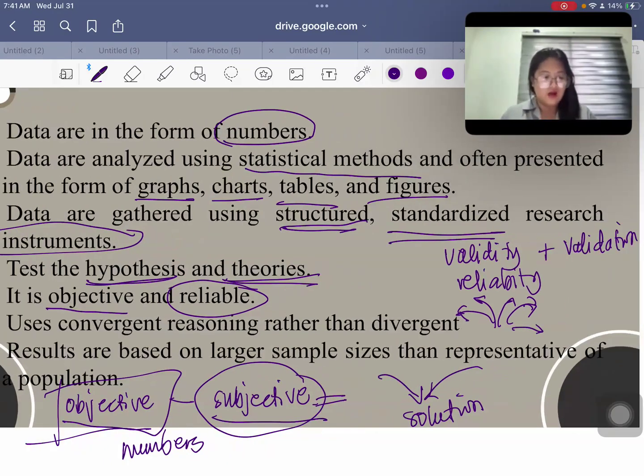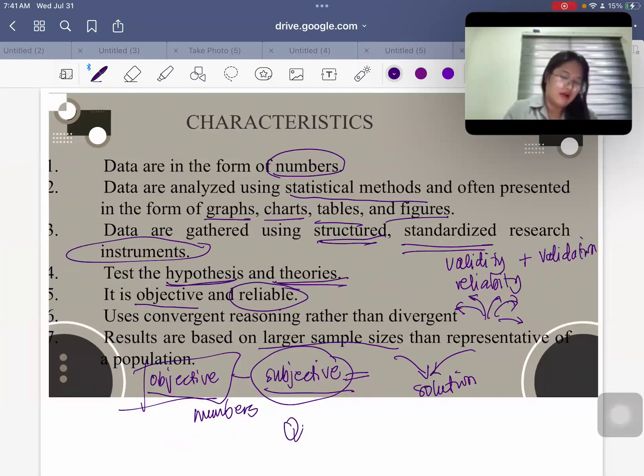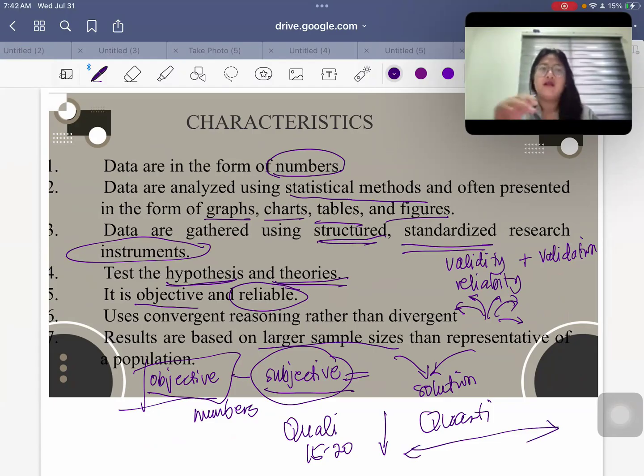And results are based on larger sample sizes than representative of a population. So if you remember in the past, in qualitative, you could have like 15 to 20 or even less since you're going for an in-depth attack in terms of the data. But for quantity, you need something broader. So it's something horizontal. You have to have the sufficient number of sample so that it will be reliable so that it will be better. So for quantity, you have the sampling techniques and you have ways on how to compute for the sample, but definitely it has a bigger number.